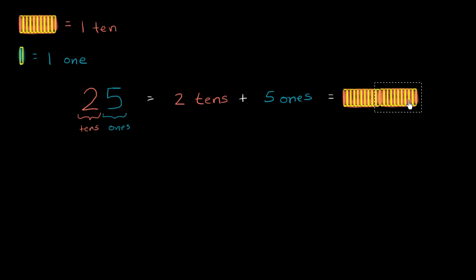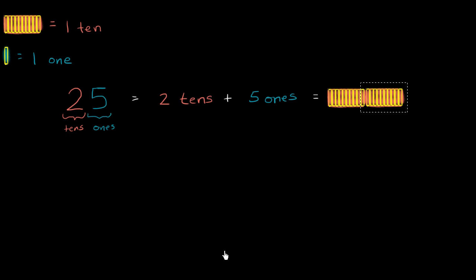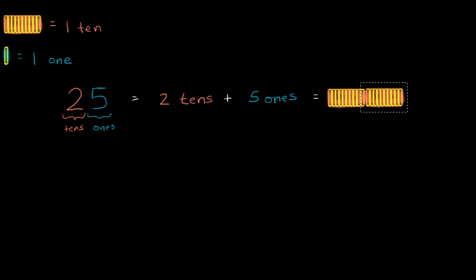So you have your two tens right over there. That really represents twenty, plus your five ones.